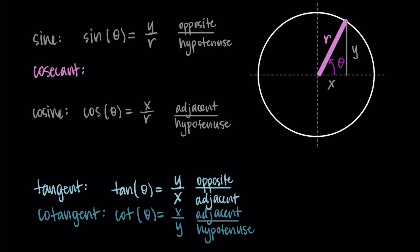Cosecant, which is csc of theta, is r over y. This is the reciprocal of sine, so we do r over y, hypotenuse over opposite. Then secant is the reciprocal of cosine. Secant of theta is r over x, or hypotenuse over adjacent. For cosecant and secant, we are just swapping the fraction, swapping the numerator and denominator.